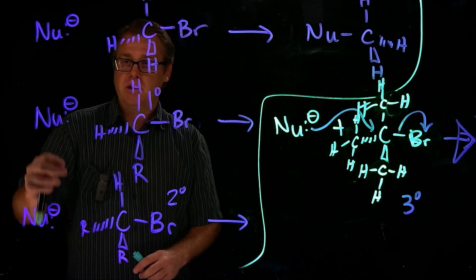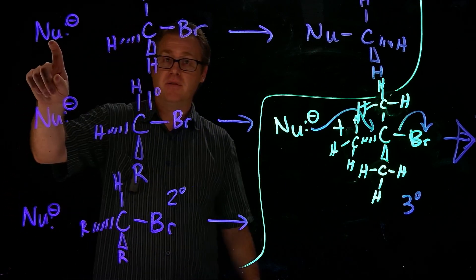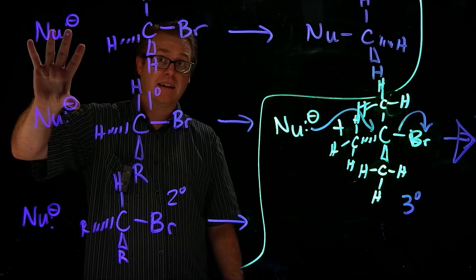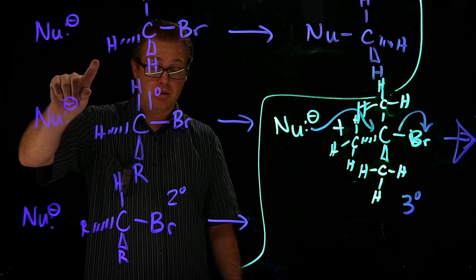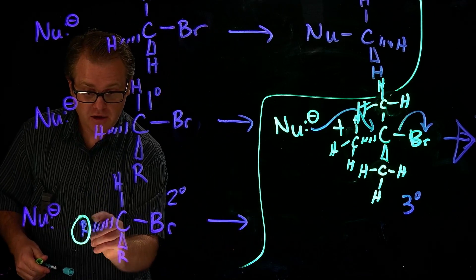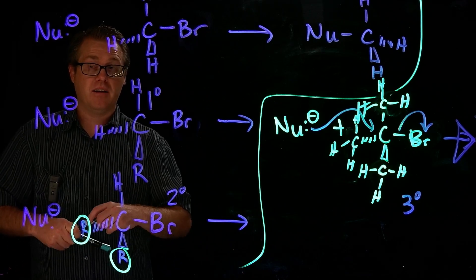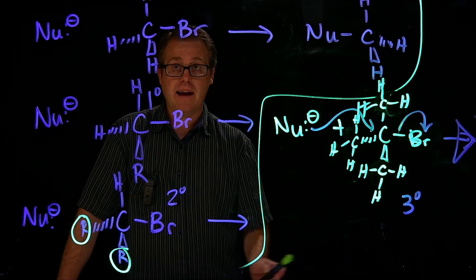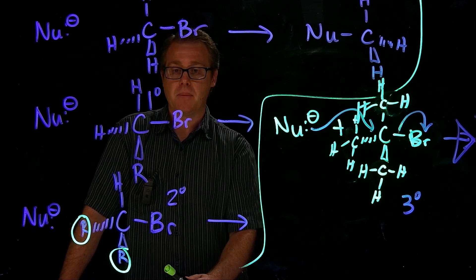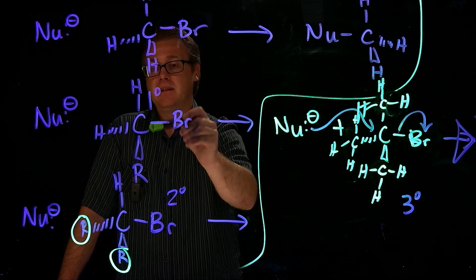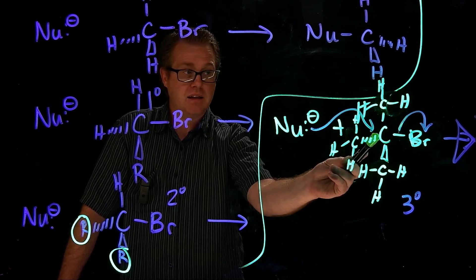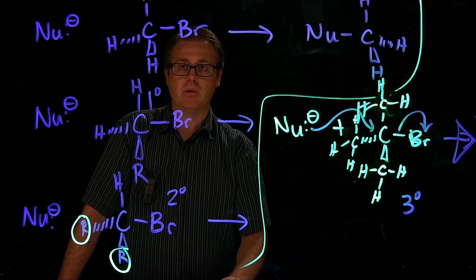So SN2 reactions work with methyl halides, primary alkyl halides, and secondary alkyl halides. A tertiary alkyl halide does not work due to sterics. When comparing rates: methyl halides react the fastest, primary halides are next fastest, secondary halides are slower due to steric bulk, and tertiary alkyl halides simply do not react via SN2.